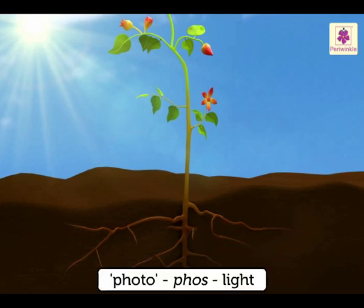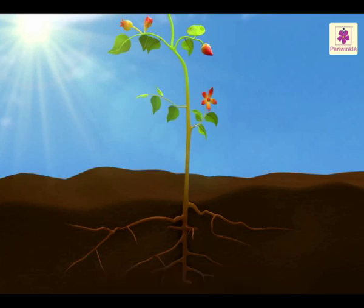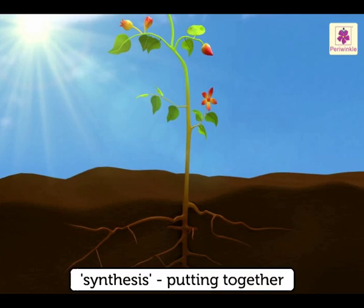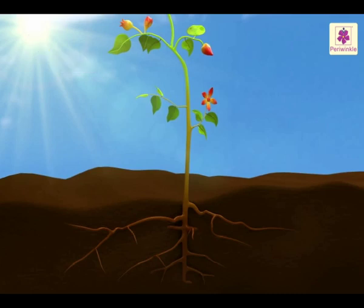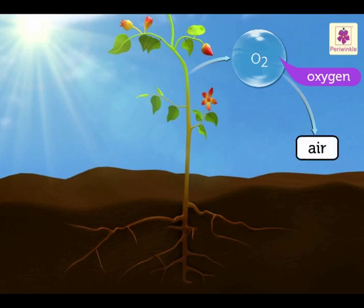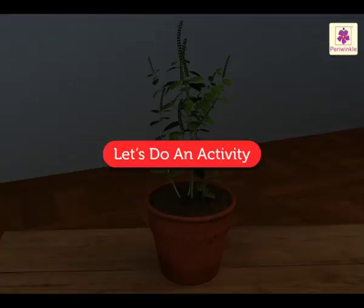Photo is derived from a Greek word phos meaning light, and photosynthesis means putting together. Photosynthesis can take place only in the presence of the sun, and hence during the day only. As the plants prepare their food, they produce oxygen gas. This gas is released into the air, and this way the green plants purify the air.